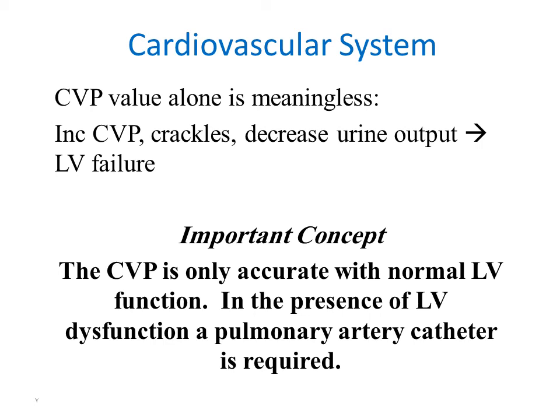When left ventricular dysfunction is present, we need a more accurate reading than central venous pressure. A pulmonary artery catheter is required in order to provide a pulmonary artery pressure reading. This catheter must be advanced through the right atrium and right ventricle into the pulmonary artery to provide a more accurate reading than central venous pressure in cases of left ventricular failure. If the left ventricle is functioning well, central venous pressure monitoring is sufficient.